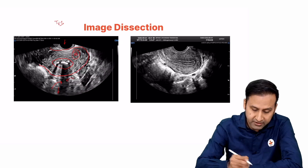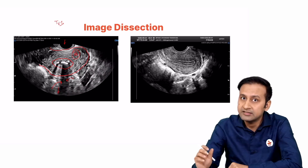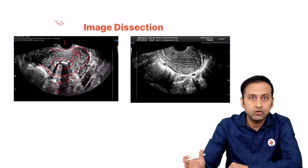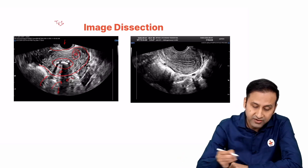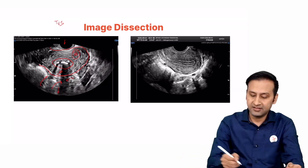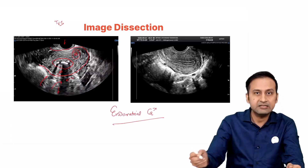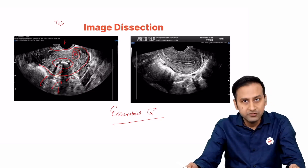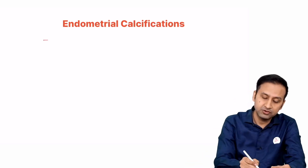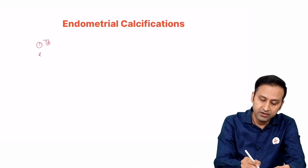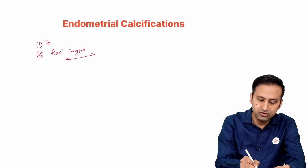Look at the posterior aspect. Just as with gallbladder calculi or renal calculi, whenever there is calcification, it will not allow sound waves to pass through, resulting in posterior acoustic shadowing. Since we can see posterior acoustic shadowing here, this is endometrial calcification. Endometrial calcification is very commonly seen with tuberculosis — a potential MCQ and image-based question. It can also be found when retained products of conception have become calcified. For your level, remember these two differentials.